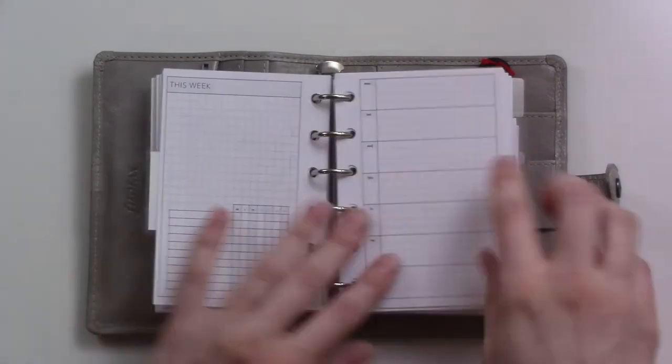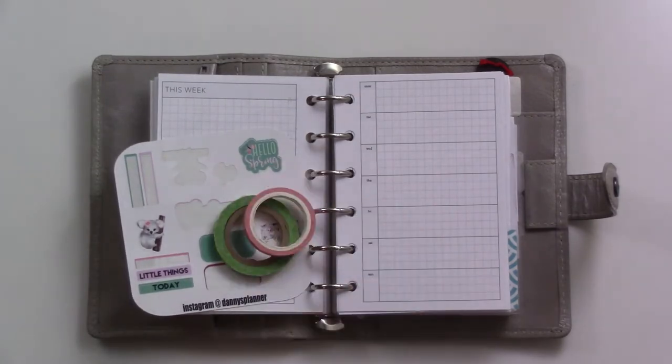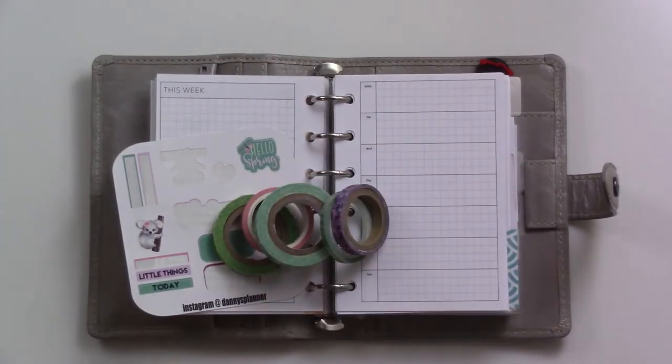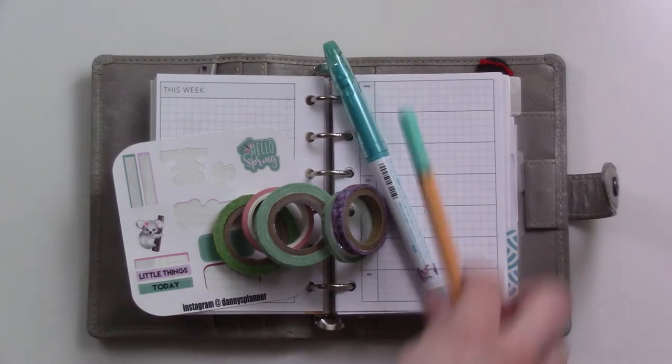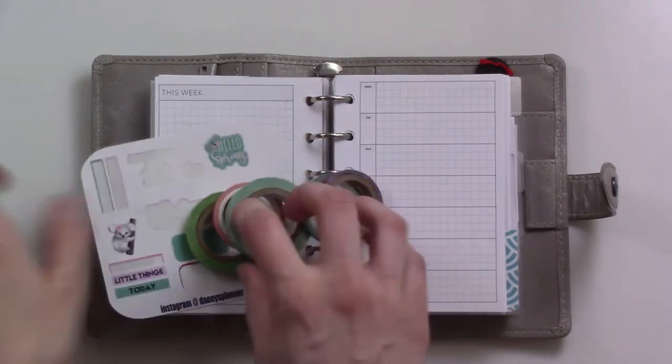I have put enough blank weekly spreads in here to last me through April. So this weekly that I'm using right now is Peanuts Planner Co's DR144. I've been seeing a lot of people all over Instagram and Facebook using this, and I just think it's gorgeous. I'm still not 100% convinced that it's going to work for me long term, but I'm trying it out.